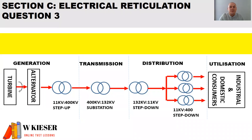In question three, in terms of the electrical reticulation network, there are four main sections: the generation, transmission, distribution, and utilization.